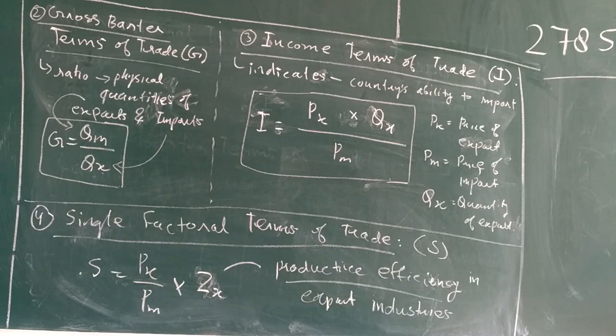This is called Z and is known as gross barter terms of trade. It is the ratio of physical quantities of exports and imports which are exchanged between countries. The formula is Z = Qm/Qx, where Qm is the quantity of imports and Qx is the quantity of exports.